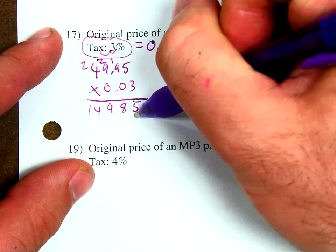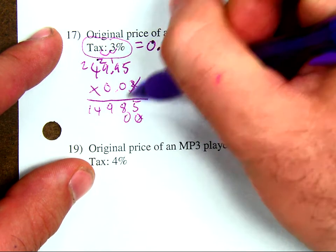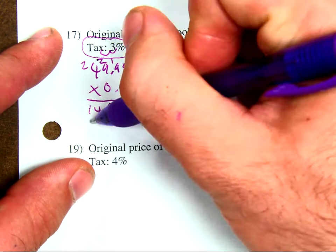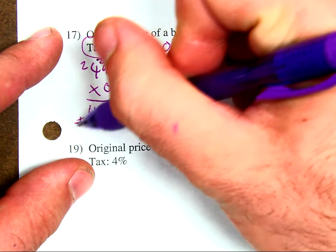Or, I can write it out. Placeholder 0. 0 times 5 is 0. 0 times 9 is 0. 0 times 9 is 0. 0 times 4 is, again, 0. It's going to be the same thing for my next 0, so I can just add these up, cut myself some slack.